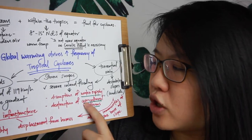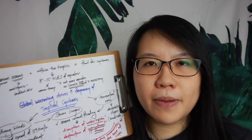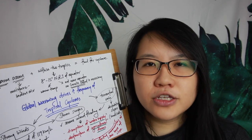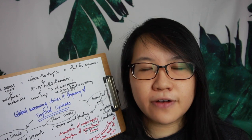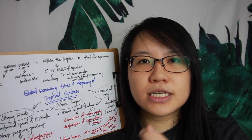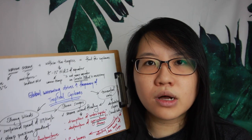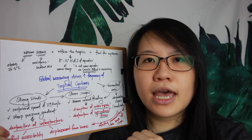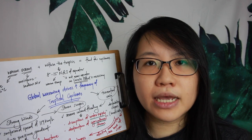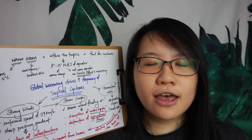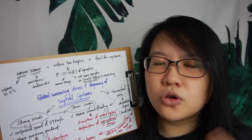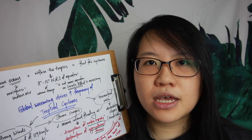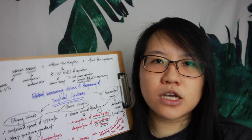Storm surges can also cause destruction of agricultural farms, particularly in countries where farmlands are located along coastal areas. If a country's food supply is heavily dependent on local agricultural produce, this can result in food shortage, and the country may have to rely on foreign aid. The impacts of storm surges are dependent on the country's context.